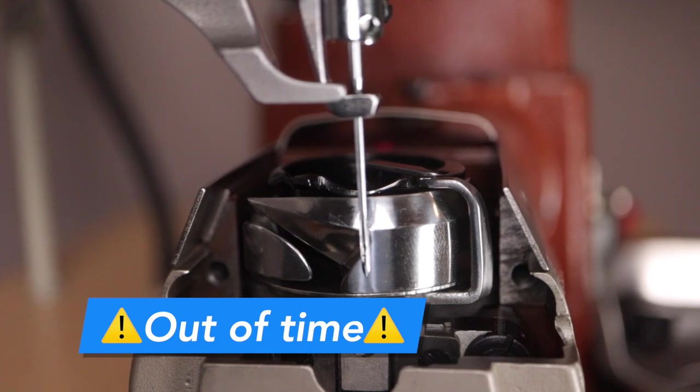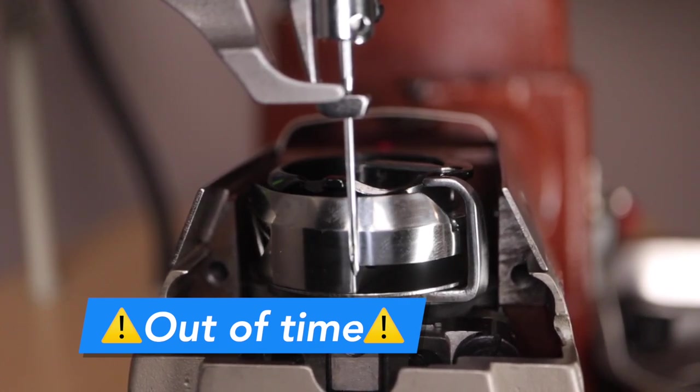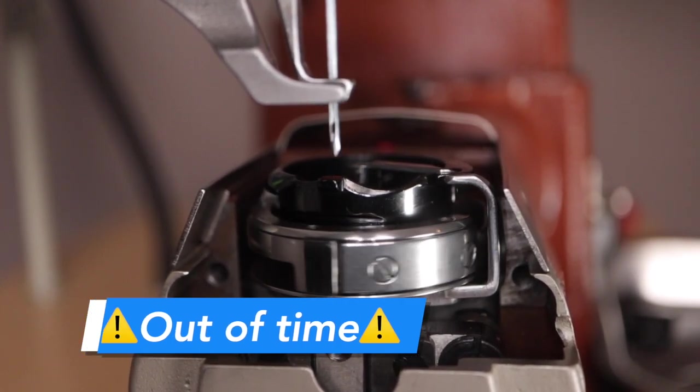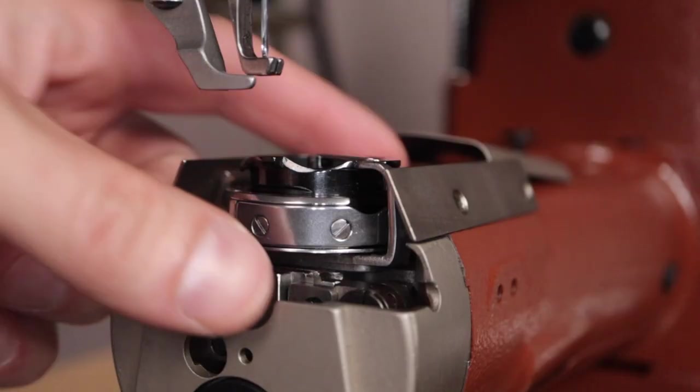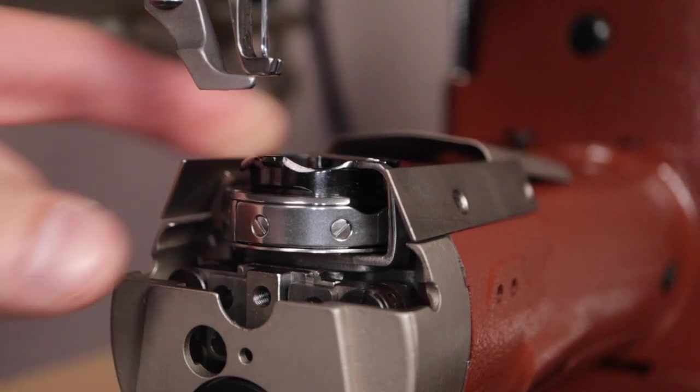So here you see the needle at bottom dead center and as it's about to ascend up, the needle hook is way too far behind. We need to make an adjustment to the rotating hook assembly by turning it. The hook simply does not turn freely. We have to go through a series of steps to loosen and make the adjustments.